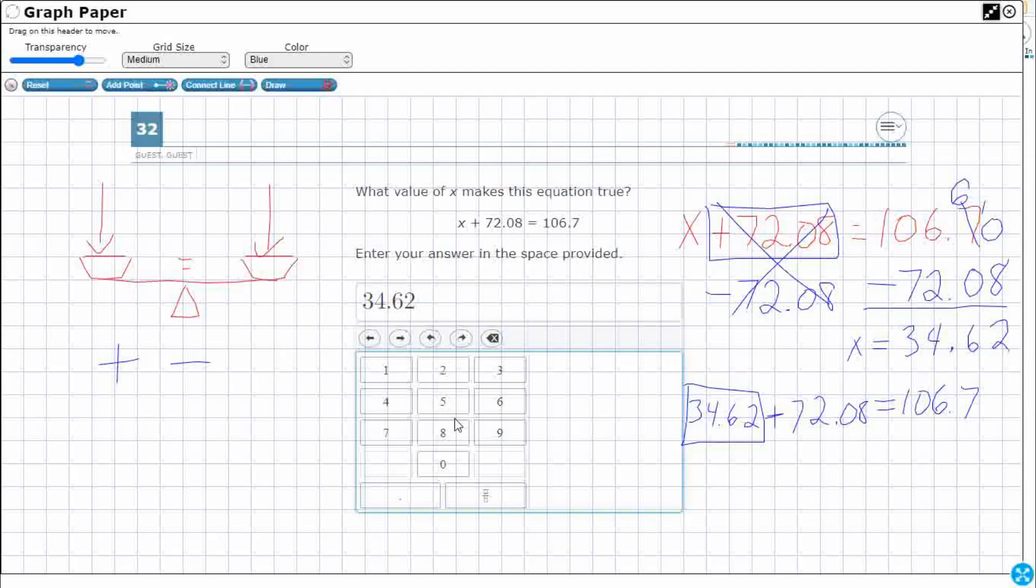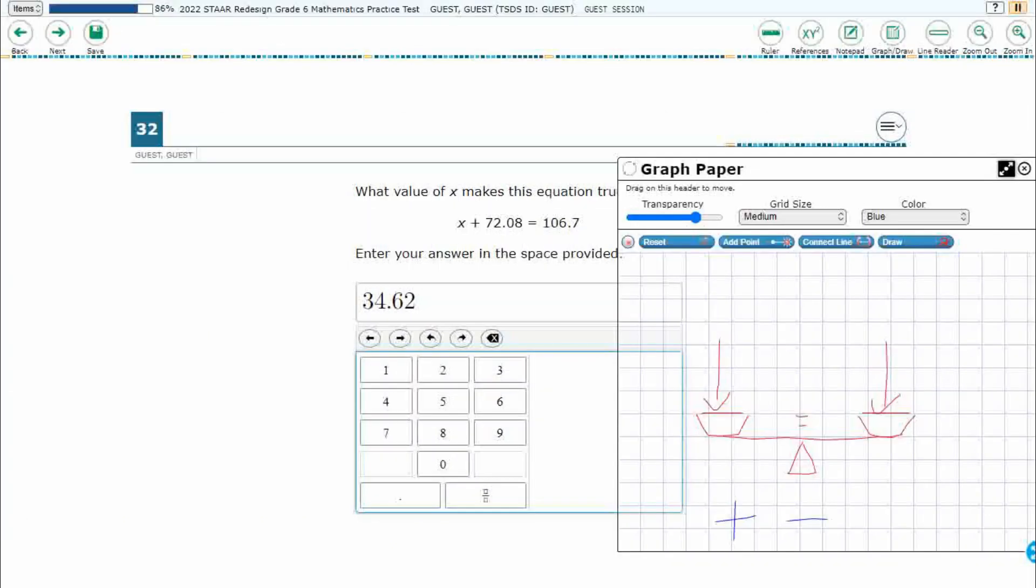You also have another option, which would technically be correct. And if you scored it like this, it's going to be fine. You could actually do this. You could do 34. Now, let me start from the beginning. You have to hit 34. But when you're ready to get into the mixed number part, you actually have to hit this fraction right here.